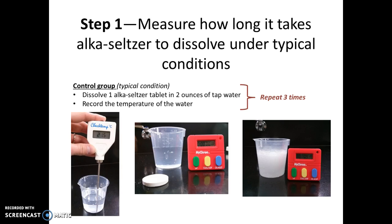The first thing you have to do for this experiment is figure out how long it takes Alka-Seltzer to dissolve under what we might call typical conditions. This represents your control group. The conditions I suggest for your control group is to dissolve one Alka-Seltzer tablet in two ounces of tap water, which mimics the conditions following the instructions on the package.